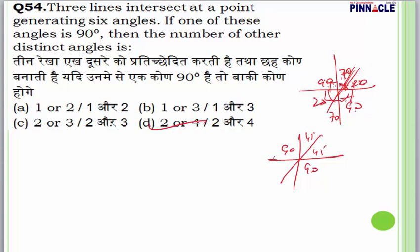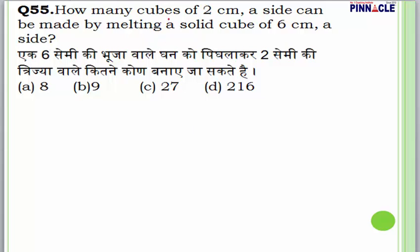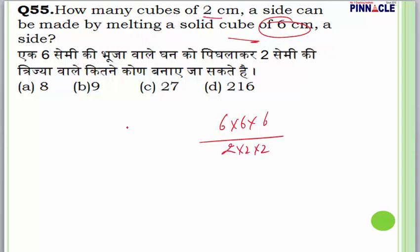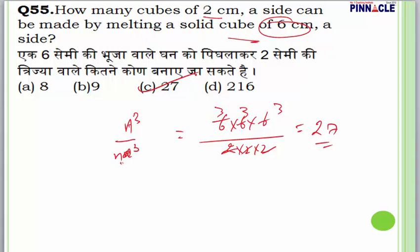Question 55: How many cubes of 2 cm side can be made by melting a solid cube of 6 cm side? Volume of large cube = 6³ = 216. Volume of small cube = 2³ = 8. Number of cubes = 216/8 = 27. Answer is C.